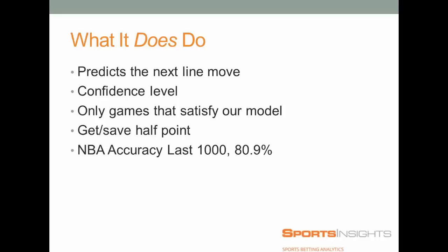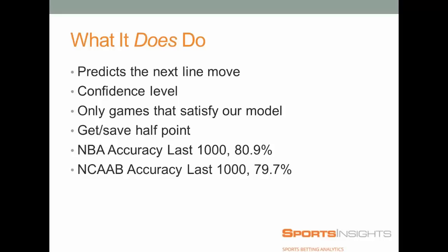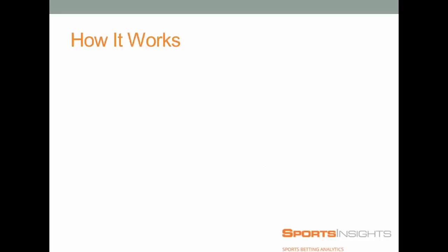The actual accuracy levels: the NBA accuracy over the last 1,000 predictions has hit at 80.9%. That means when we predict a line movement, historically there's an 80.9% chance that it did hit. The college basketball accuracy over the last 1,000 is a little bit lower at 79.7% — still pretty respectable. We definitely noticed that pro sports are a little more predictable than college basketball, but they're both still very positive signals.